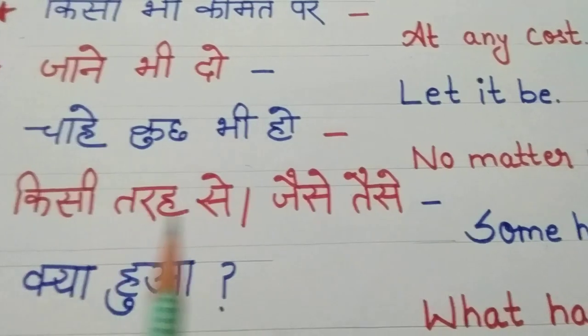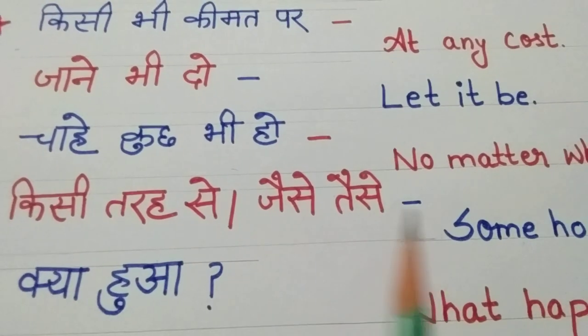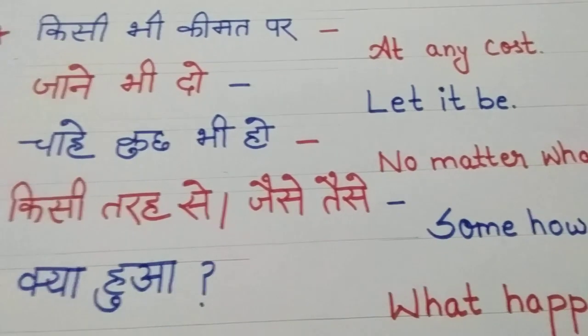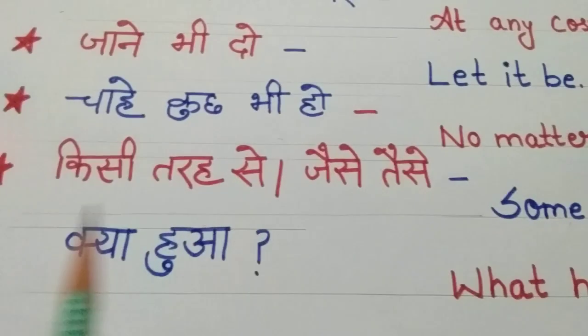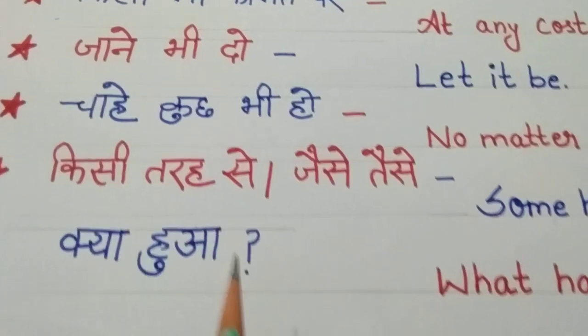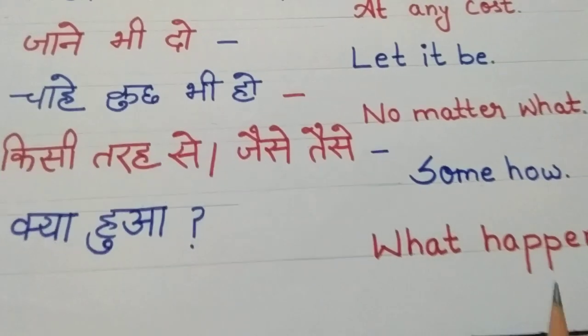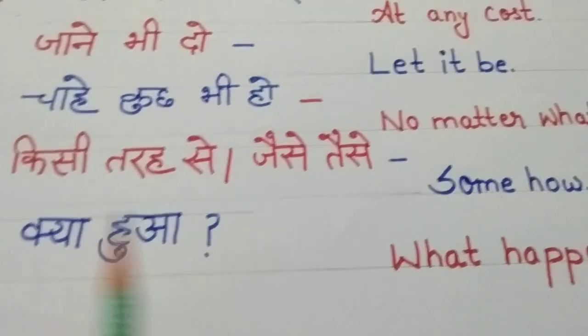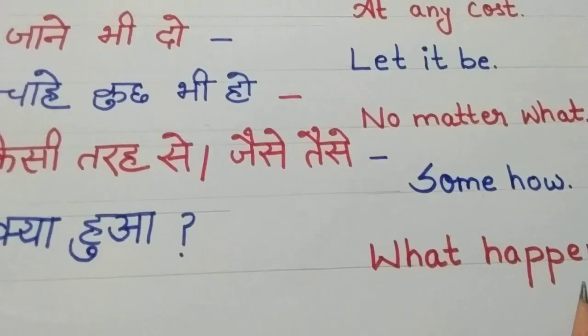किसी तरह से, जैसे तैसे — somehow. क्या हुआ — what happened?